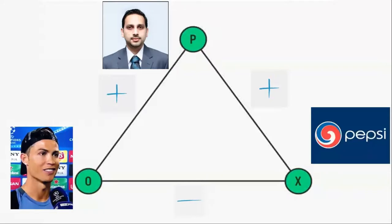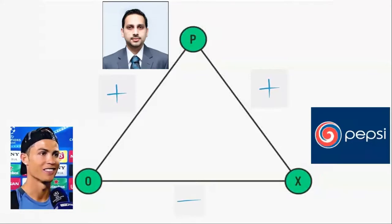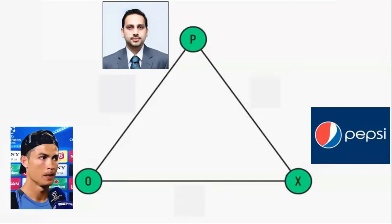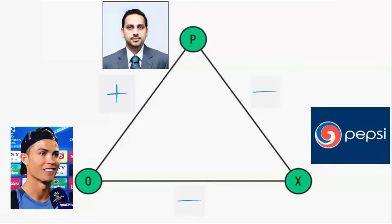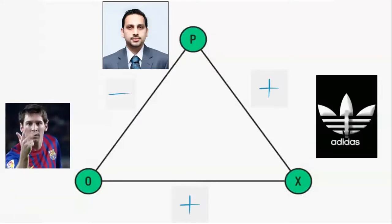An unbalanced relationship would be: I like Ronaldo, Ronaldo does not like Pepsi, but I like Pepsi. So P plus O, P plus X, O minus X. Now due to the psychological discomfort of this unbalanced relationship, I may be more likely to change my attitude towards Pepsi because of my positive relationship with Ronaldo.